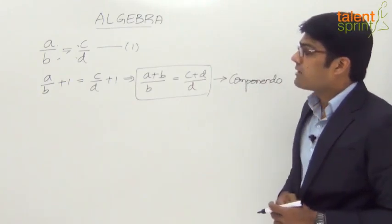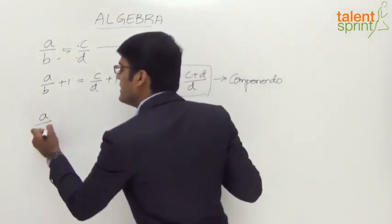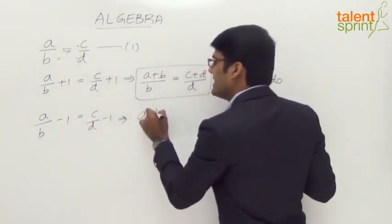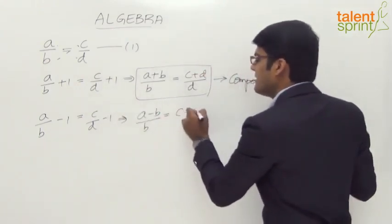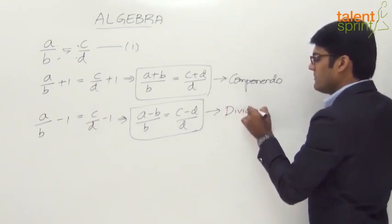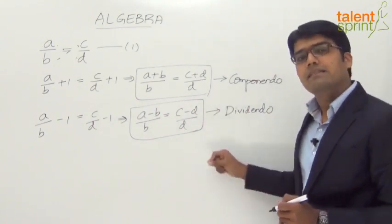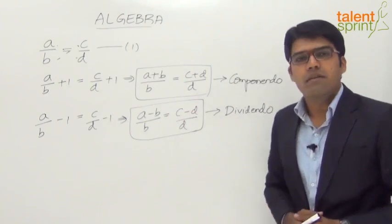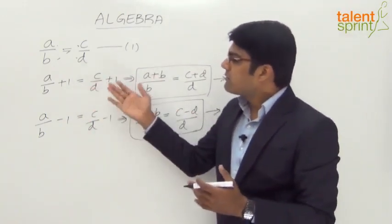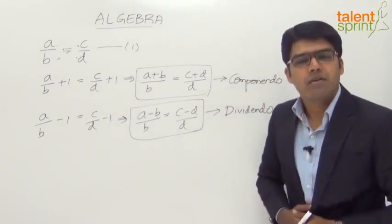Let us now go for another relationship. Let us subtract 1 from both sides of equation number 1. We get a by b minus 1 equals c by d minus 1, which simplifies to a minus b by b equals c minus d by d. Here we are subtracting the denominators from the numerators, and this relationship is known as dividendo. When simplifying questions, we can simply remember these identities — componendo and dividendo — and apply them directly.